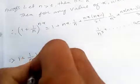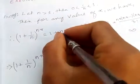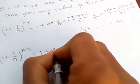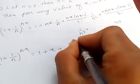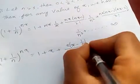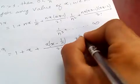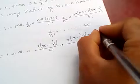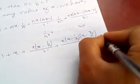Simplifying: 1 plus 1 over n to the power nx equals 1 plus x, and the n's cancel. We get x(x minus 1 over n) divided by 2 factorial, plus x(x minus 1 over n)(x minus 2 over n) divided by 3 factorial, plus and so on.